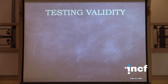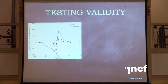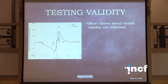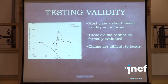To test validity, here's an example of a model trace and some data from a model I worked on about nine years ago. Do you think the simulation matches the data? I probably thought so when I published it and the reviewers were okay with it, but I don't know. The problem is that this is a really informal claim about whether the model was valid, and it's difficult to actually formally evaluate it.